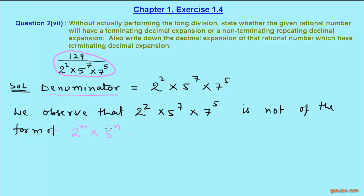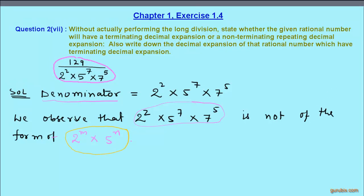We observe that this denominator is not of the form 2 raised to m multiplied by 5 raised to n. Therefore,